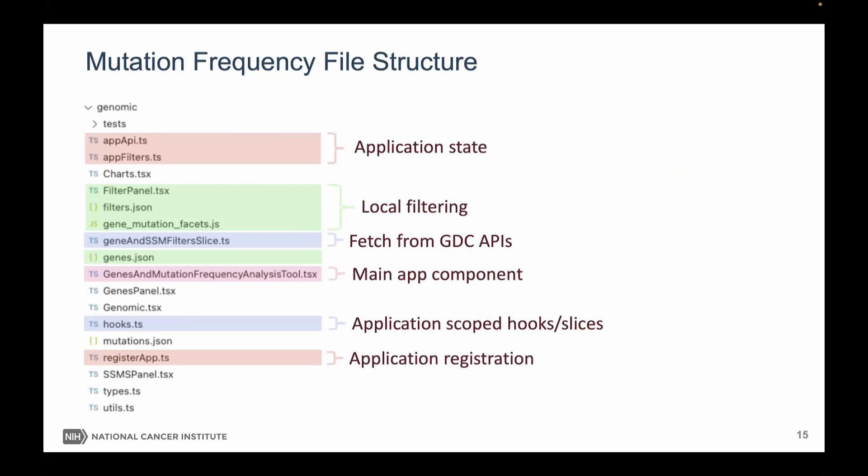Looking at the file structure: we have components that handle local filtering with a default set of filters from the API, a list of facets defining the filter types, and a panel for the UI of the left side. There are also functions to fetch calls from the GDC API, an entry point main app component, application-specific hooks and slices to maintain local state, and a way to register the application with the portal so it shows up in the analysis center.